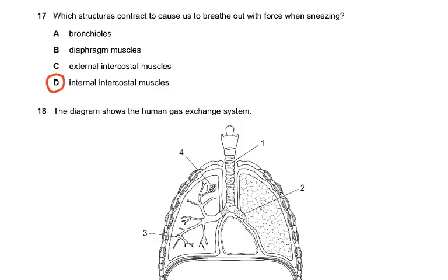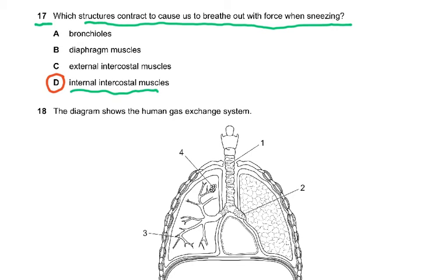Question 17: which structures contract to cause us to breathe out with force when sneezing? The internal intercostal muscles. When we sneeze, it is a forced exhalation — like when you cough. The internal intercostal muscles contract and press on the lungs for forceful exhalation.